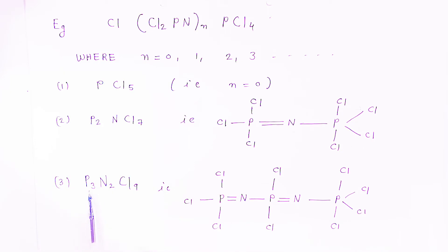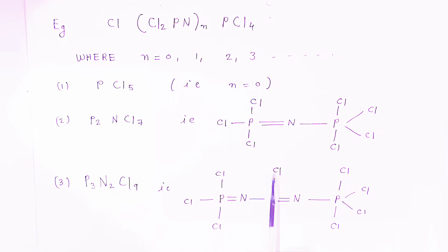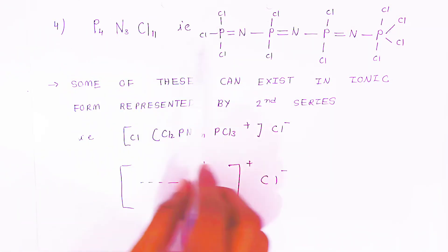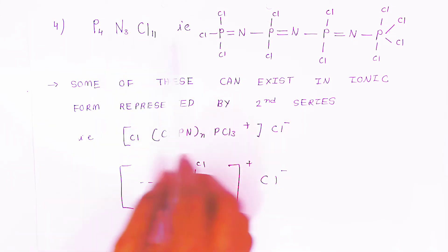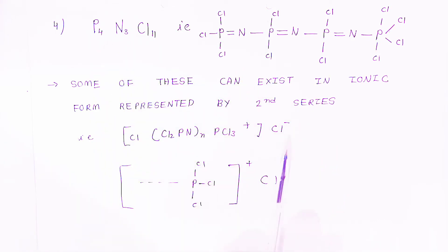When n=3, you get P3N2Cl9, which has the structure P=N-P=N-P, with the terminal phosphorus atoms each having three chlorides and the internal phosphorus having two chlorides (one above, one below) due to the +5 oxidation state. Similarly P4N3Cl11 can be represented with four phosphorus and three nitrogen atoms alternating. Some of these compounds exist in ionic (salt) form, represented with a cation and chloride anion.